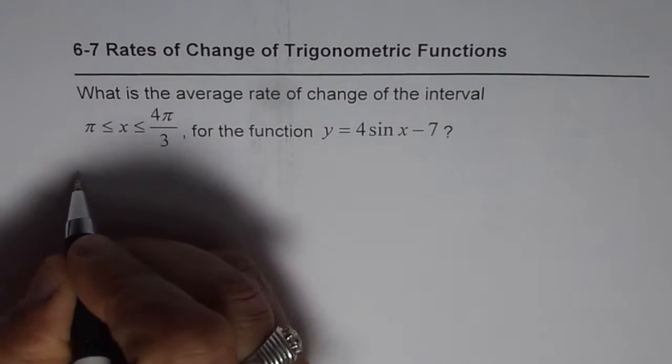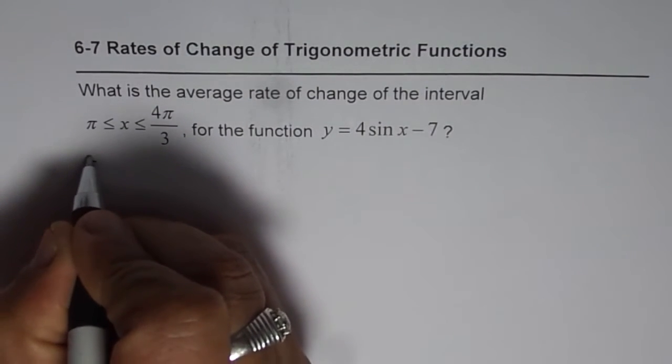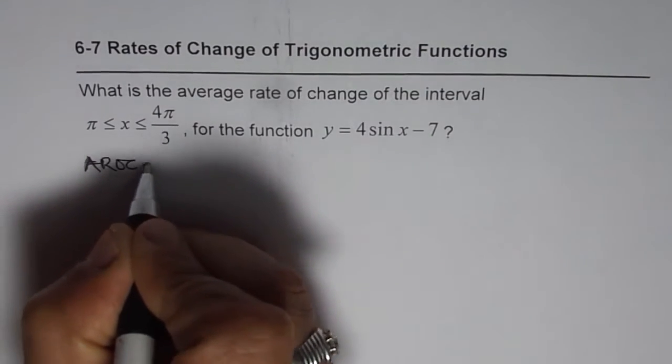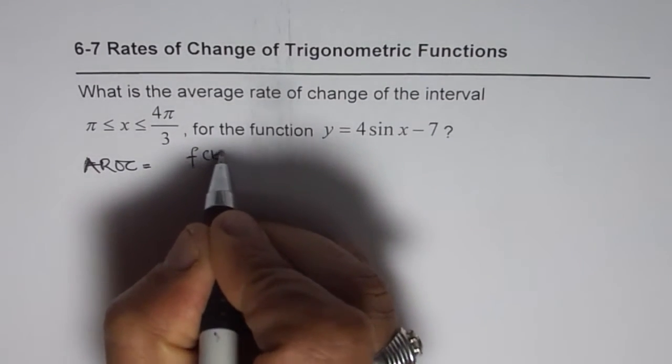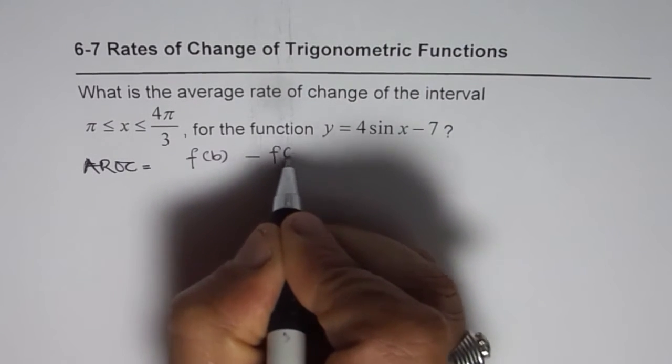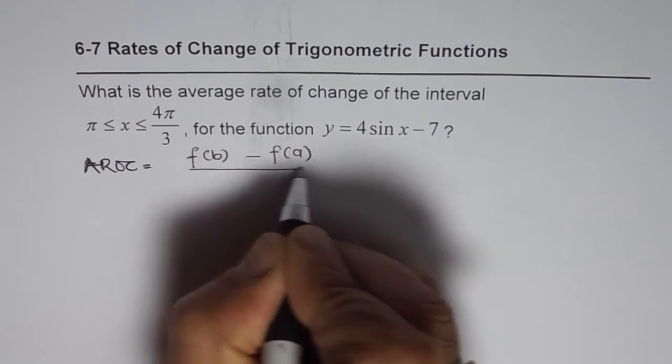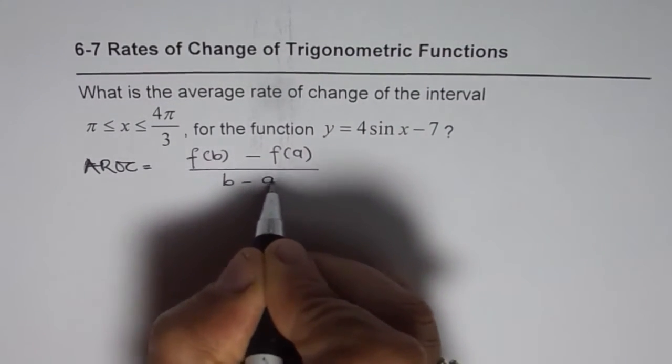As we know, the average rate of change is equal to the value of the function at point b minus the value of the function at point a, the x value, over b minus a.